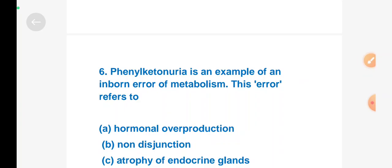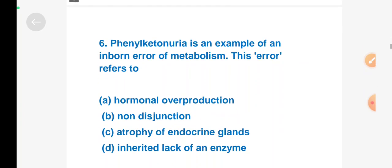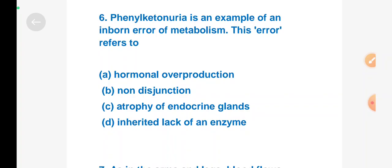Next question: Phenylketonuria is an example of an inborn error of metabolism. This error refers to - Option A: hormonal overproduction, Option B: non-disjunction, Option C: atrophy of endocrine gland, Option D: inherited lack of an enzyme. Right answer is Option D, inherited lack of an enzyme.